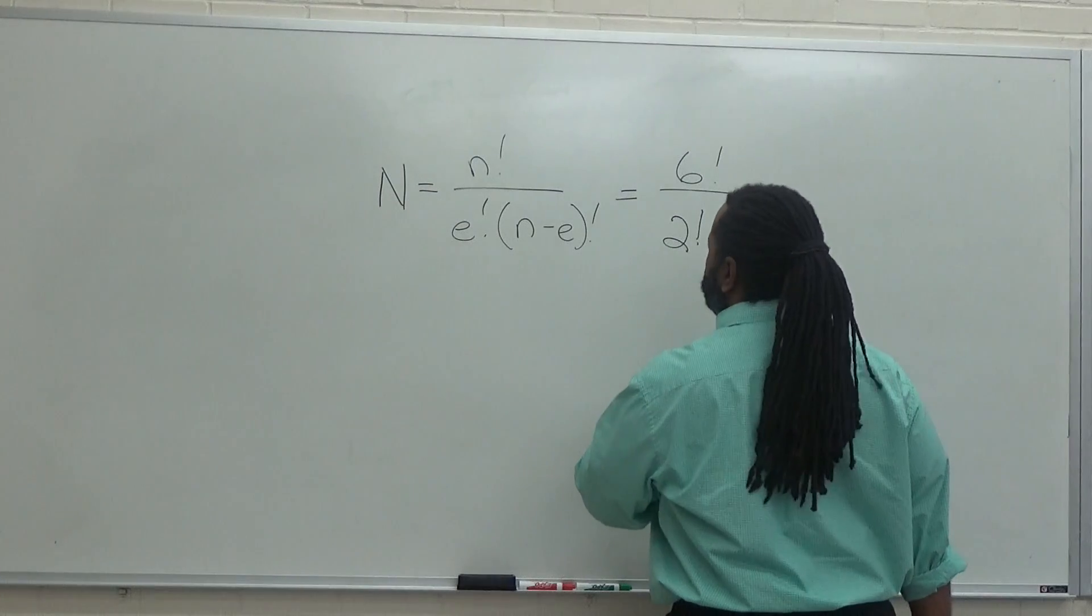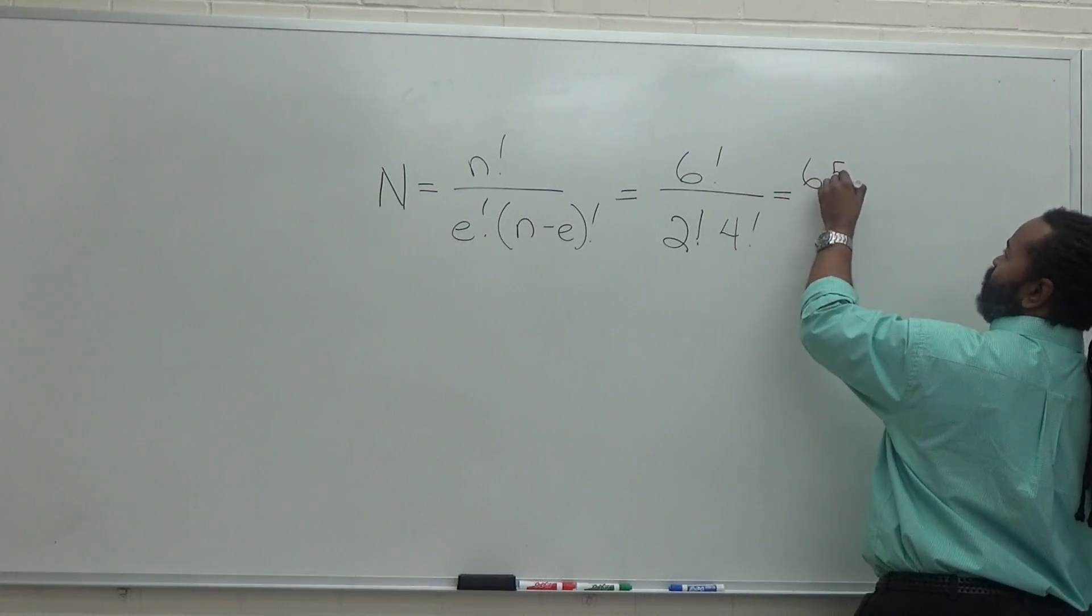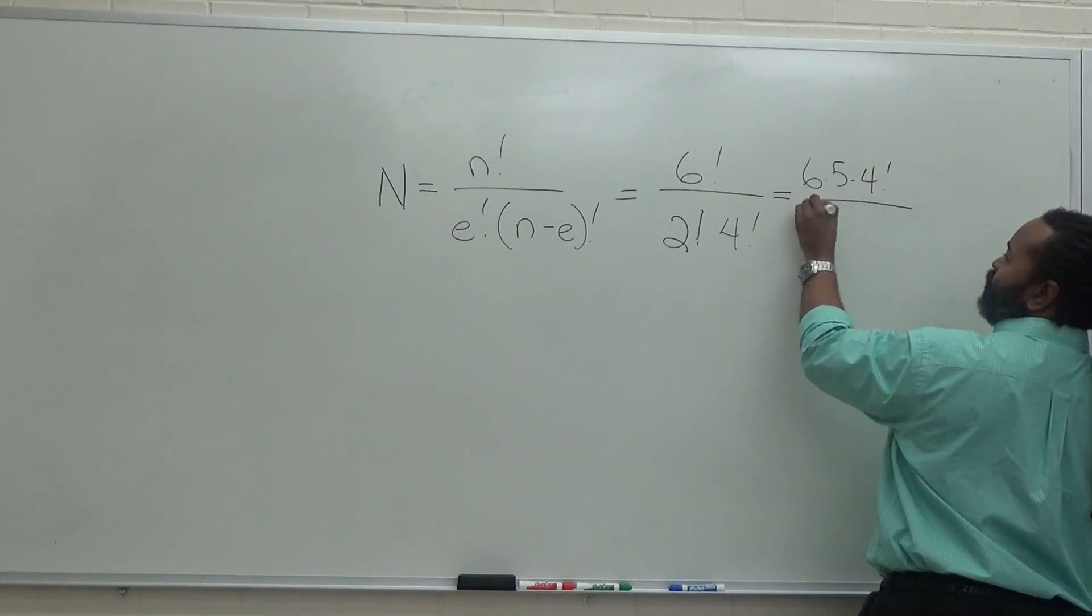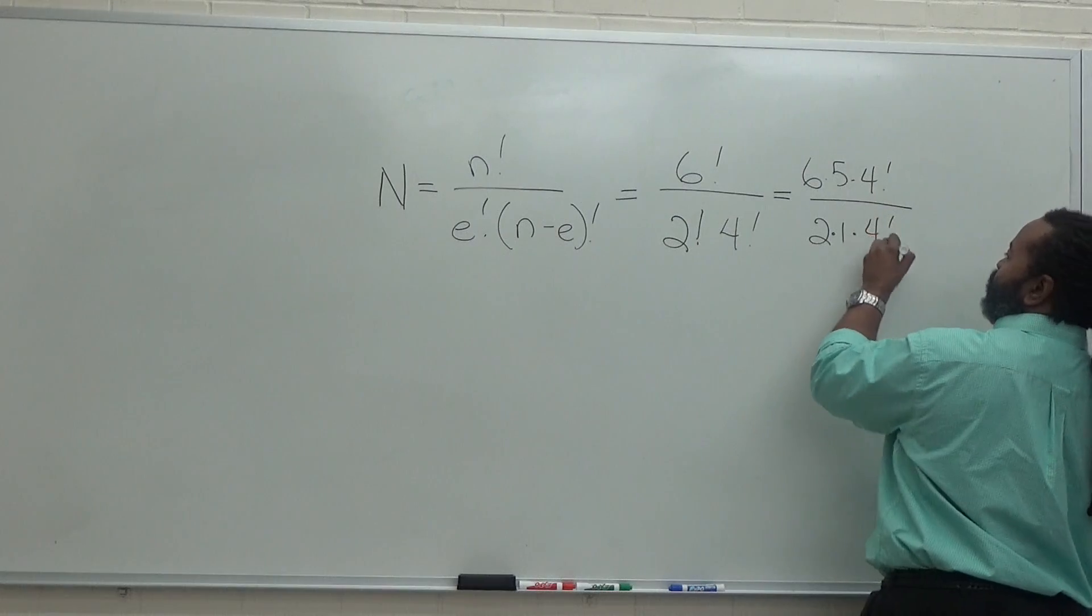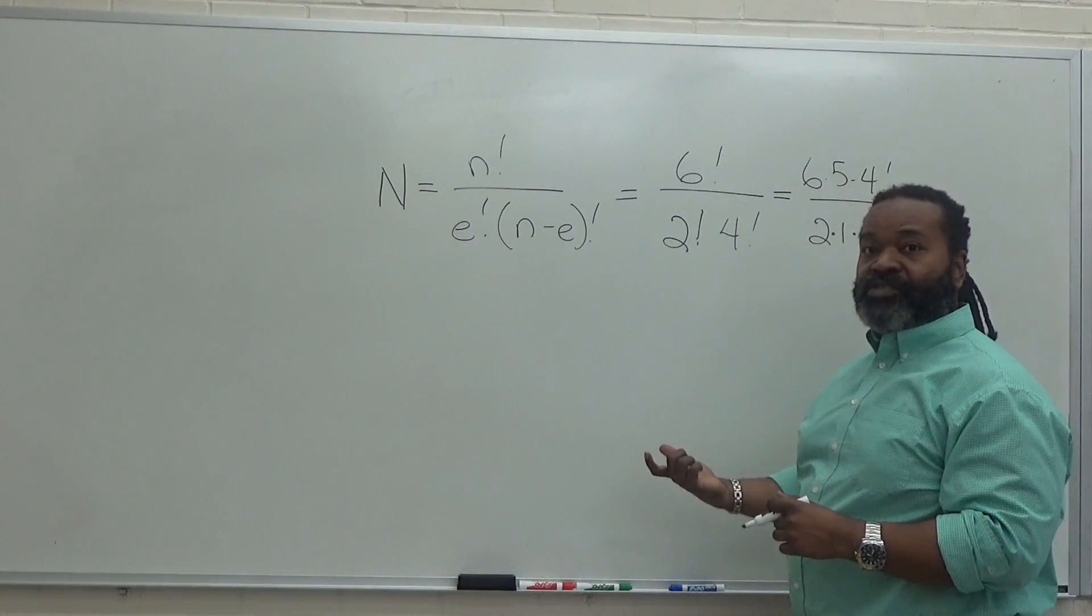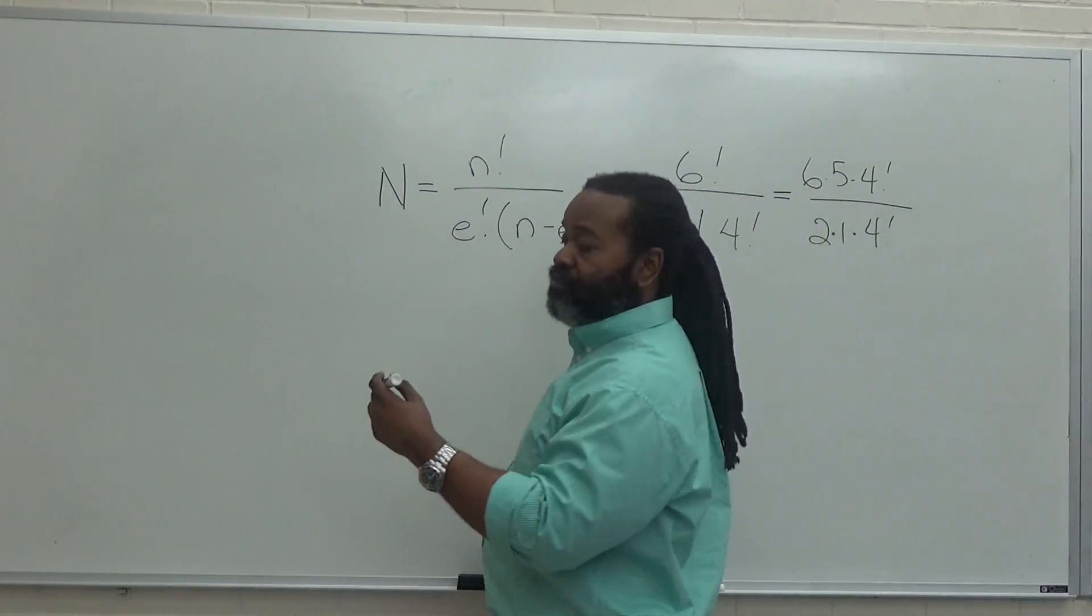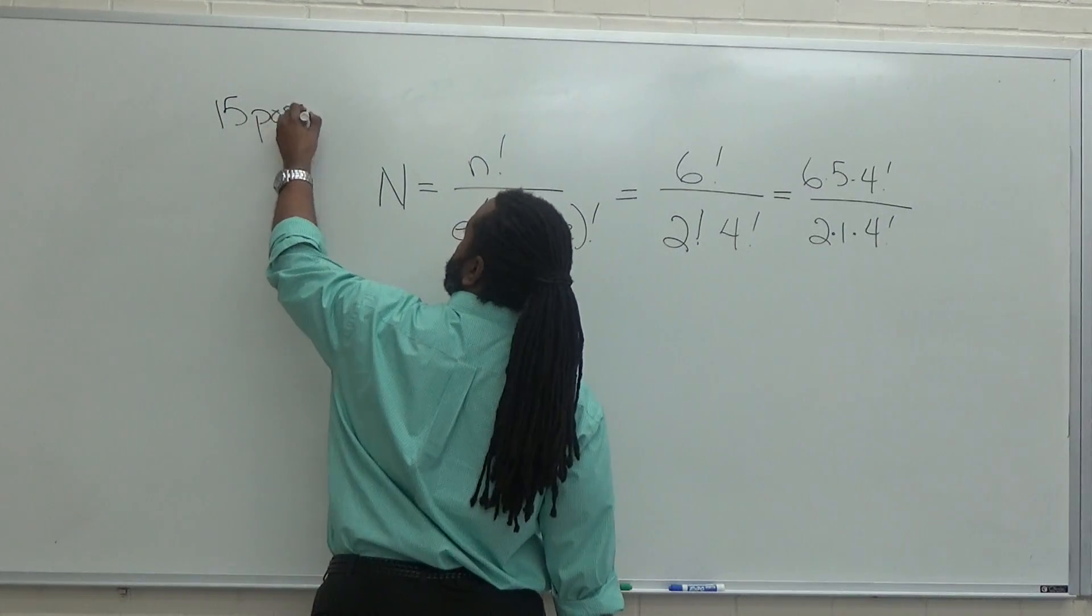We can use our tricks for factorials to quickly determine that this is six times five times four factorial up top. We have two factorial, which is two times one, and we have another four factorial. So these will cancel. Six times five is thirty. Thirty divided by two gives me a total of fifteen possible states.